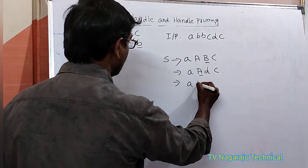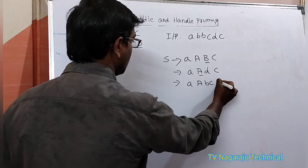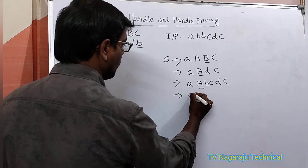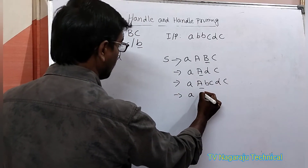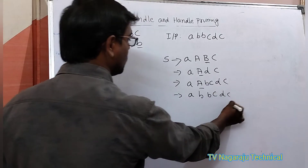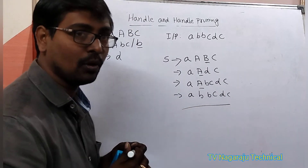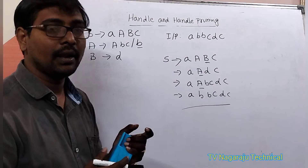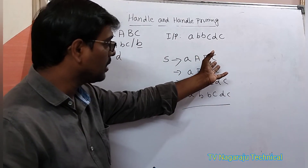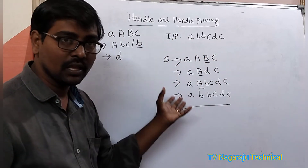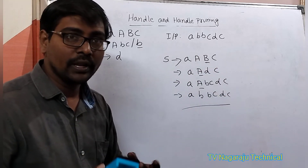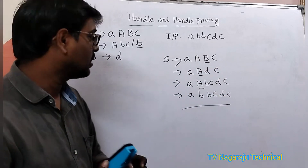A is replaced with A, B, C, D, C. Now the non-terminal A, B, B, C, D, C — this is called handle pruning. Simply replacing non-terminals with their productions in the rightmost derivation in reverse order.